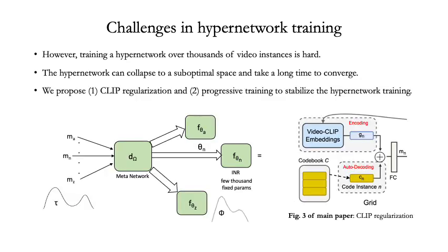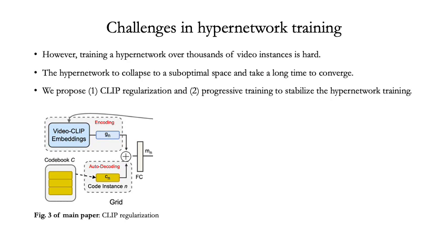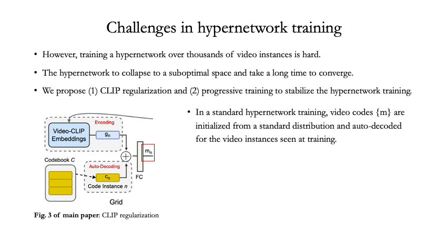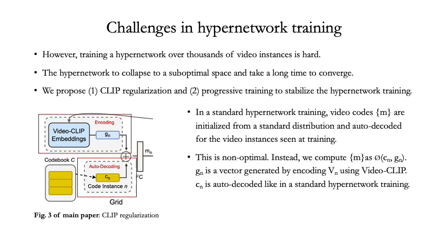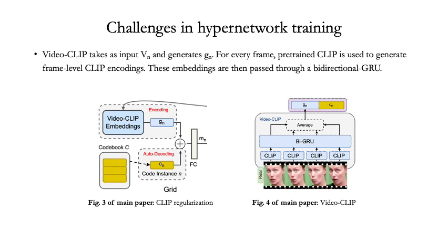Training hypernetworks over thousands of video instances could take a long time to converge. We propose clip regularization and progressive training to stabilize hypernetworks. Clip regularization helps the training by assigning meaning to the latent space tau. In a standard hypernetwork training, video codes M are regressed at the time of training for each video instance. Instead of directly regressing, we compute M by combining an encoded clip embedding G_N and autodecoded context code C_N. To generate clip embeddings for videos, we design VideoClip, which first uses a pre-trained clip encoder to encode each frame of a video. These frame-wise embeddings are then passed through a bi-directional GRU to generate video embeddings.